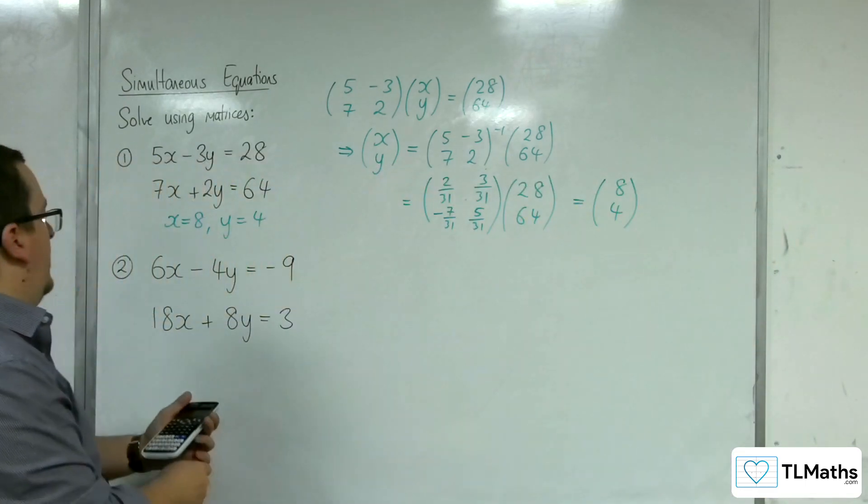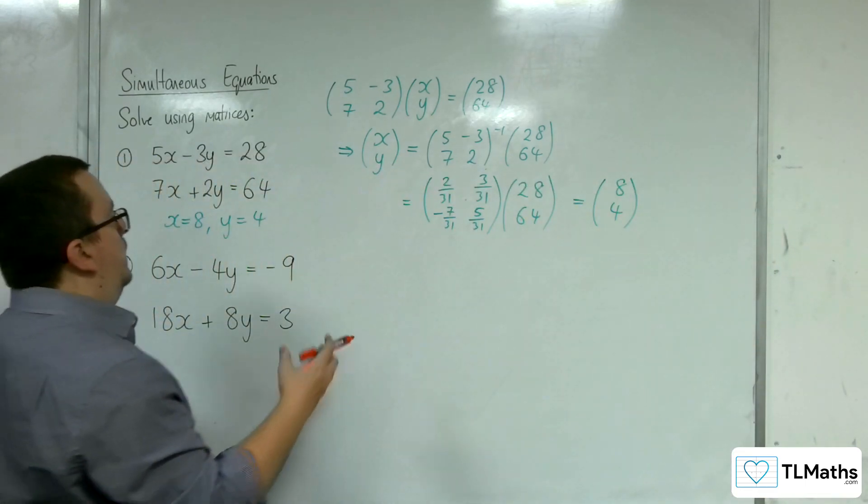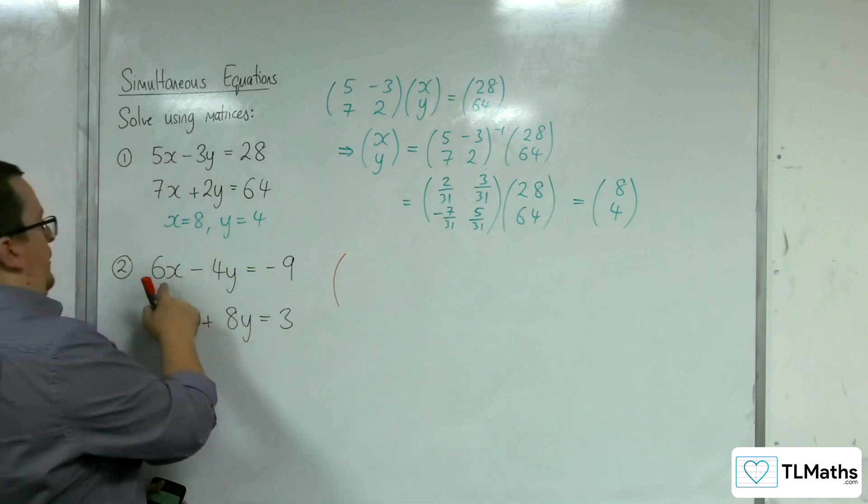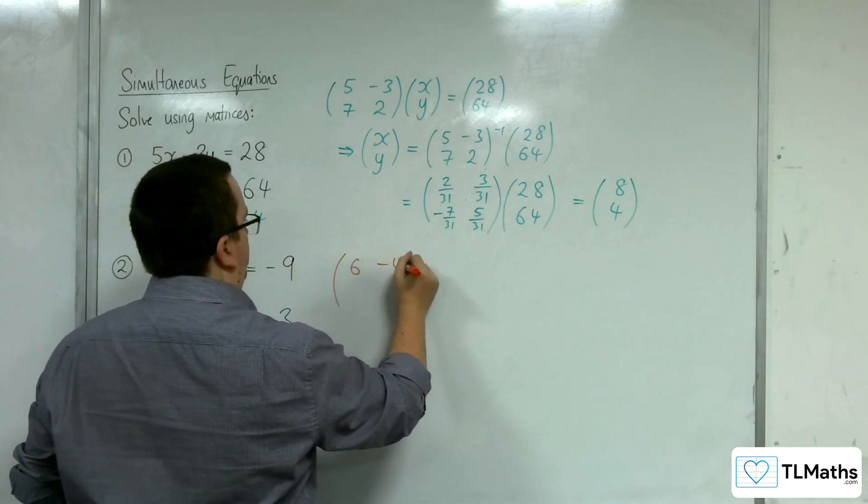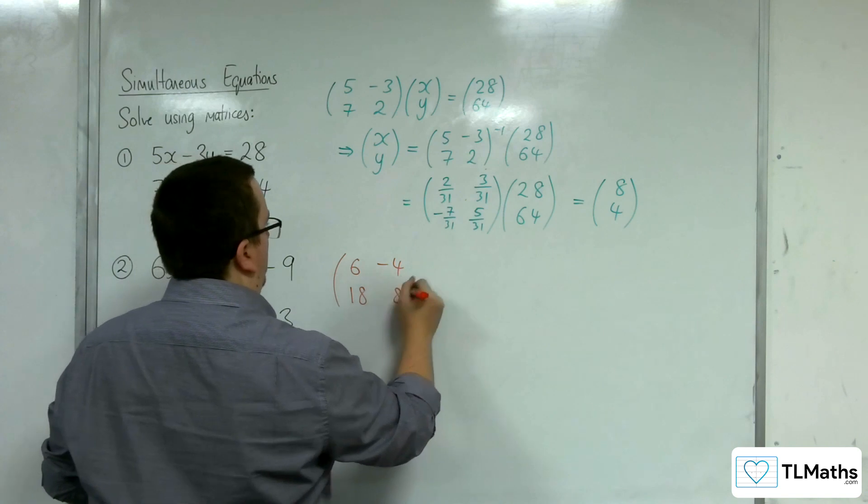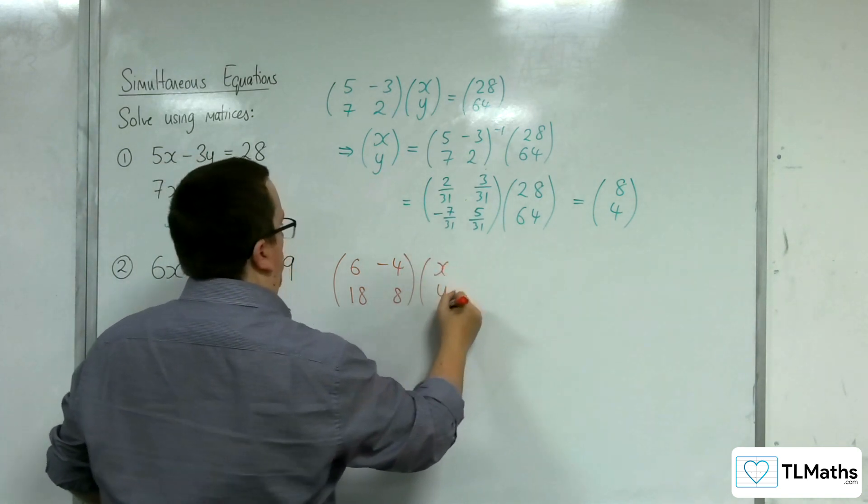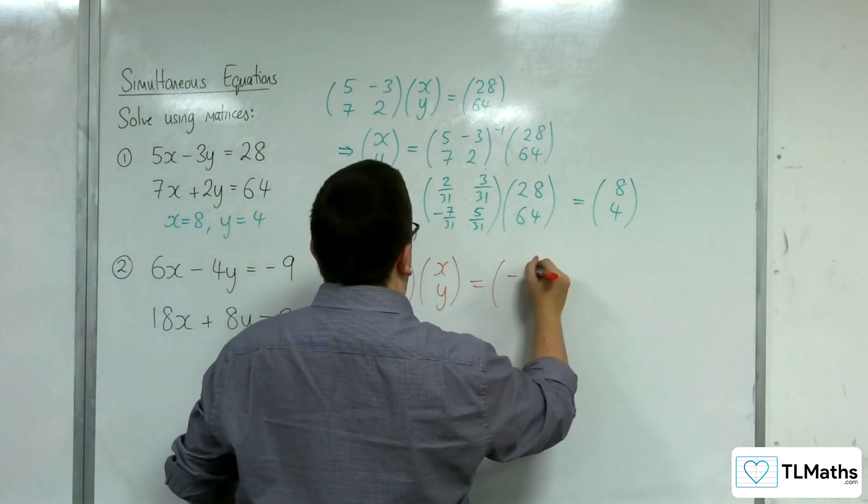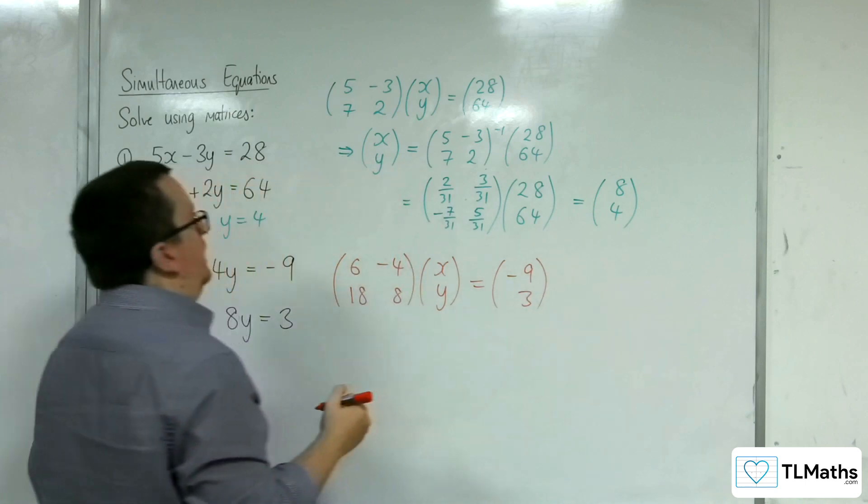Let's have a look at number 2. We have 6, -4, 18, 8 being applied against x, y, and that's going to be equal to -9, 3.